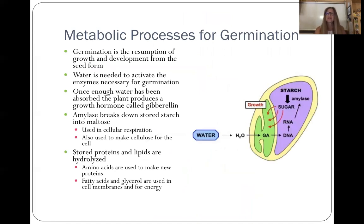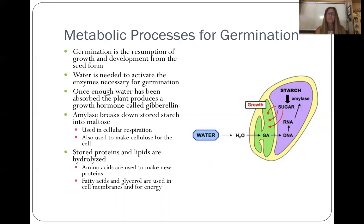Metabolic process of germination — this is a test question on my test every single year and appears on the IB exam. Germination is the resumption of growth and development for the seed to form a new plant. First, water makes it into the seed and activates the enzymes needed for germination. Once the water has been absorbed, the plant produces a growth hormone called gibberellin. Then amylase — another enzyme — breaks starch down into maltose. That step going to maltose is important — make sure you've got it down. Maltose is then used in cellular respiration and also to make cellulose so the cell has structural support. Stored proteins and lipids are hydrolyzed — that's why you need water. Amino acids are used to make new proteins, and fatty acids and glycerols are used in cell membranes as the plant grows.